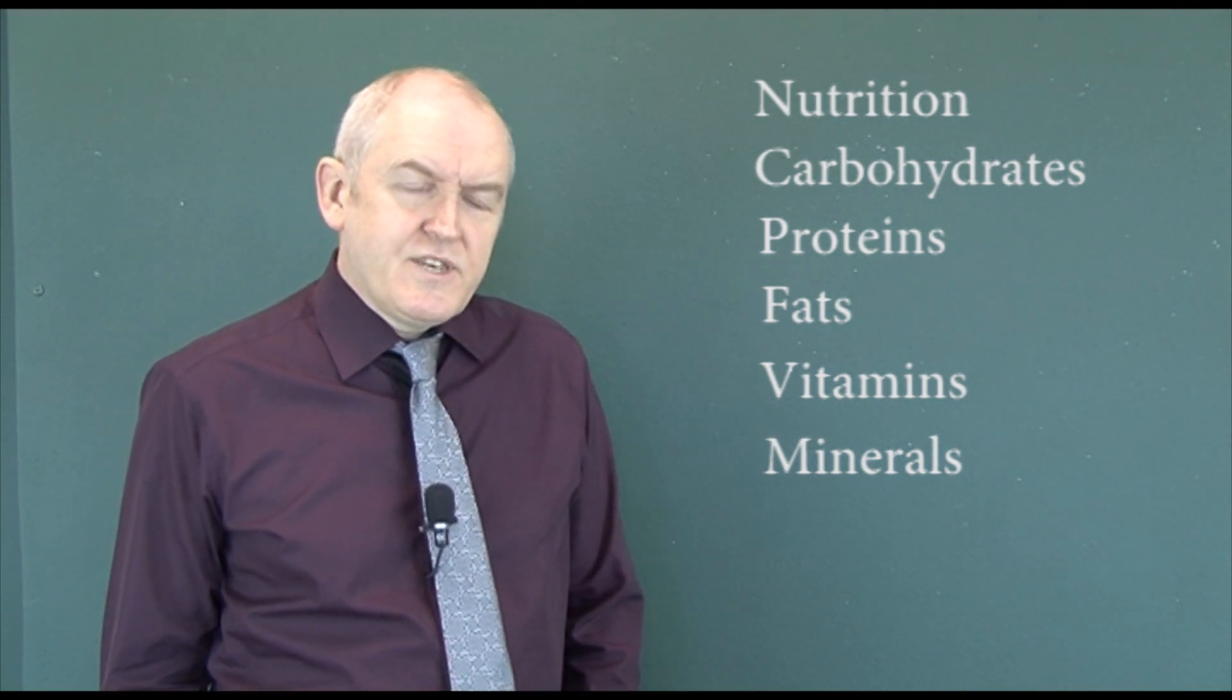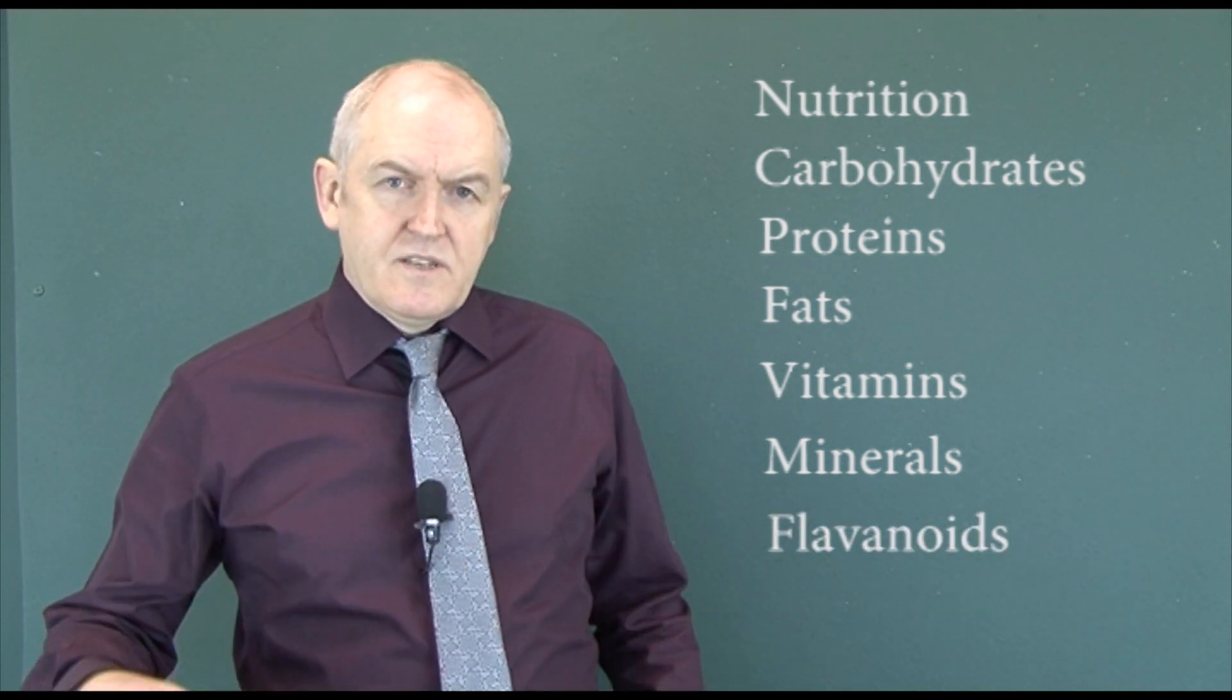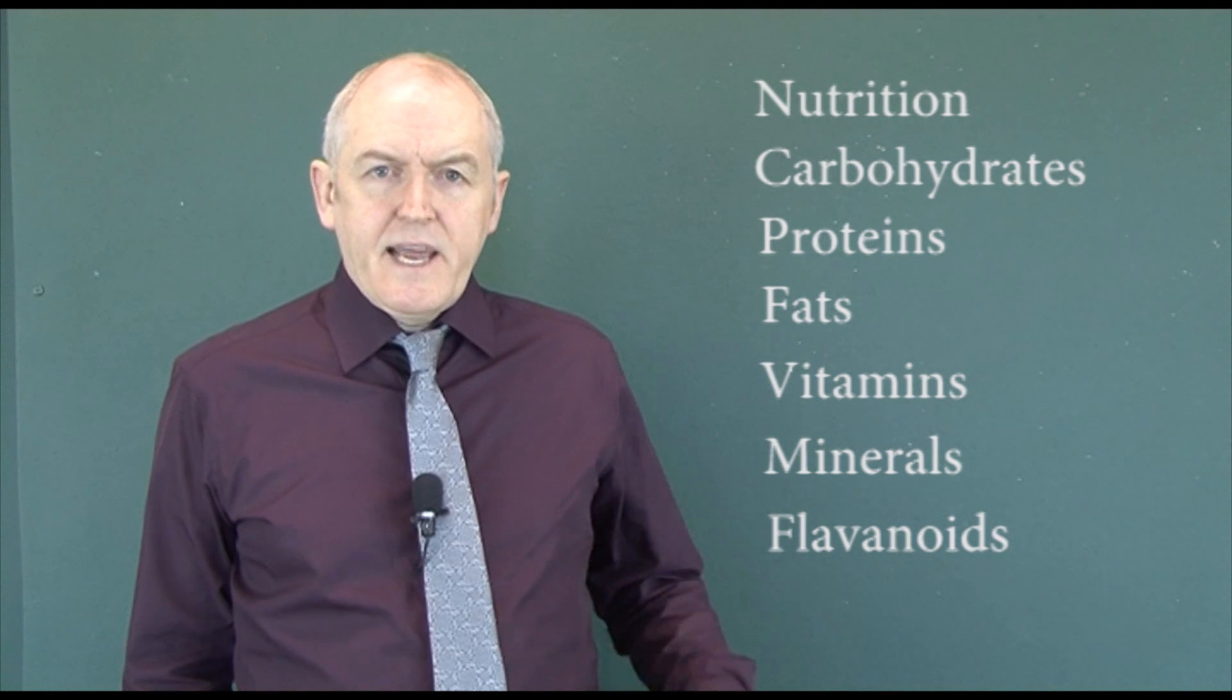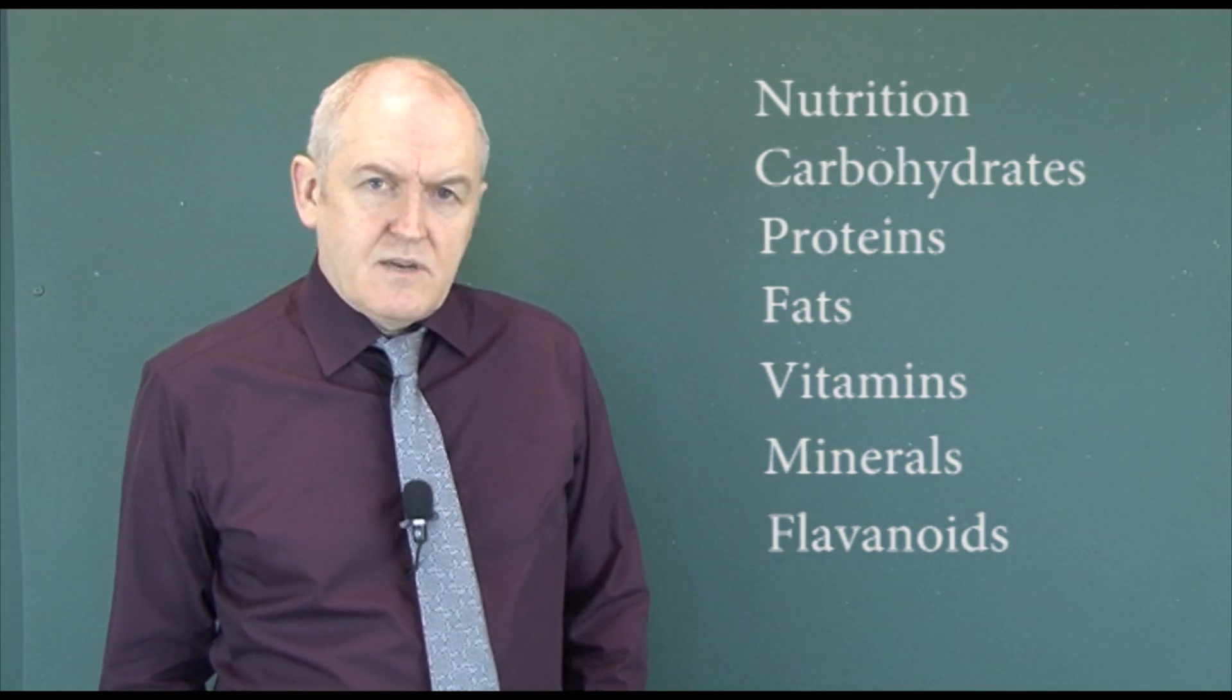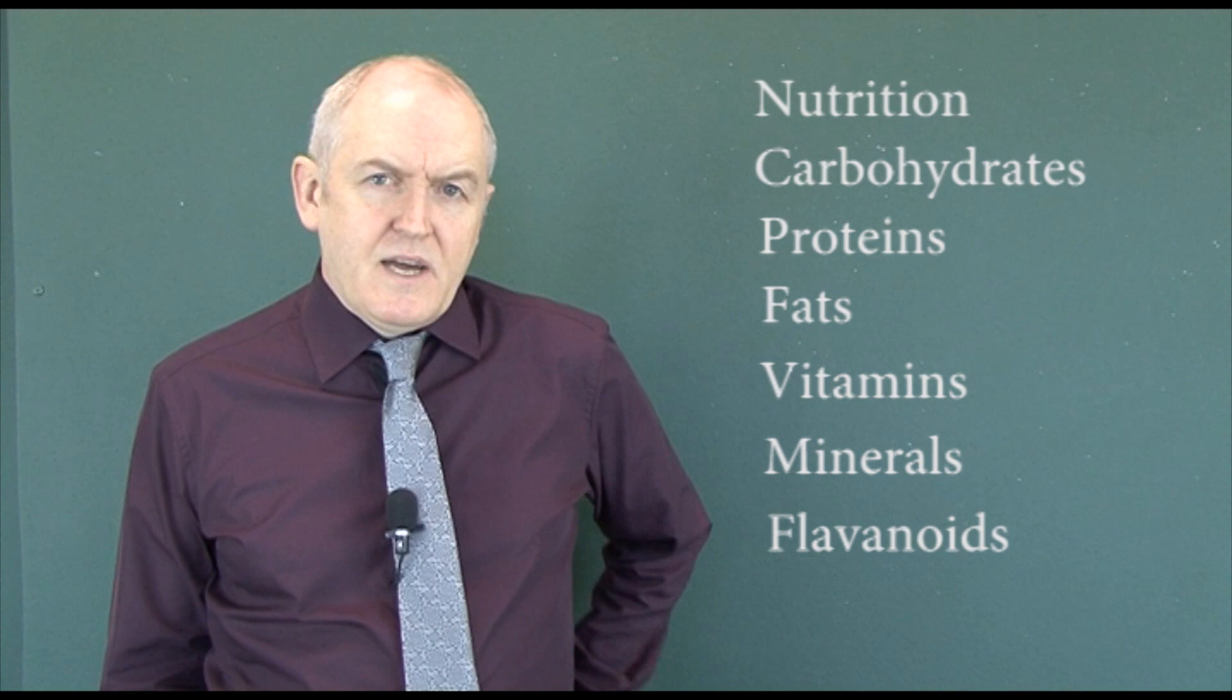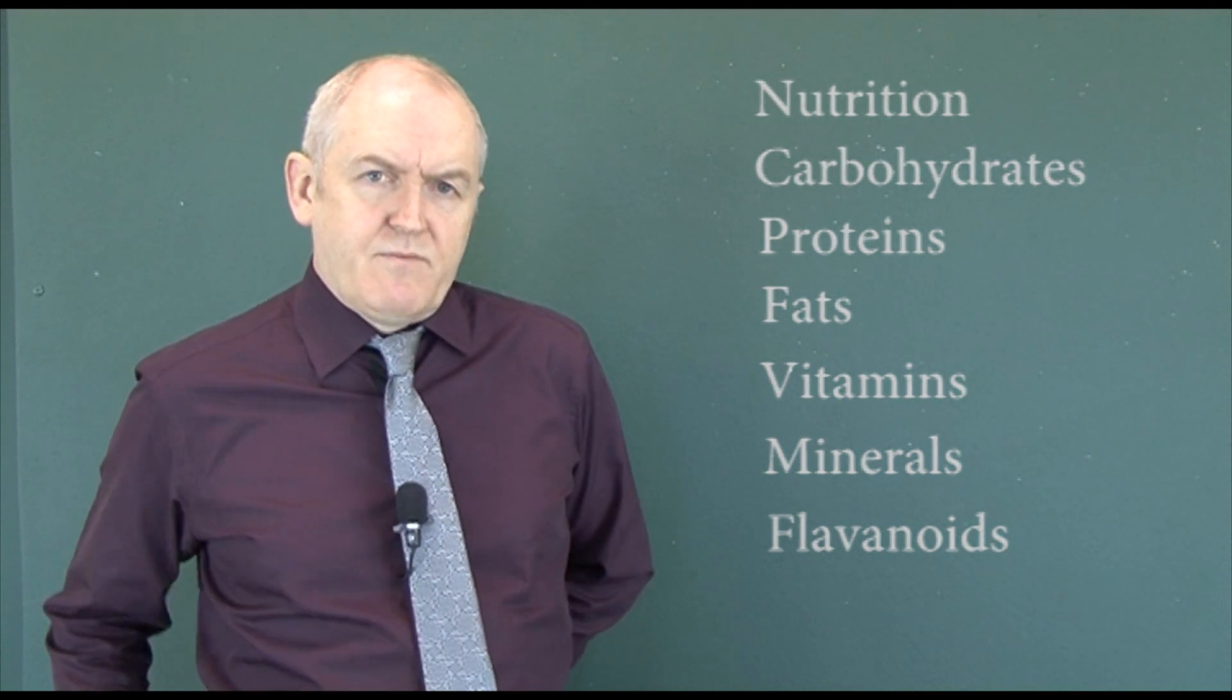Another one that some research is starting to come out on now is flavonoids. Flavonoids are present in the colored parts of fruits and vegetables. There is evidence that flavonoids can help with healing of chronic wounds such as leg ulcers. Make sure the patient's got a balanced diet and an adequate diet and bear in mind they're probably going to need more than normal to facilitate the healing process if a lot of tissues have been damaged.